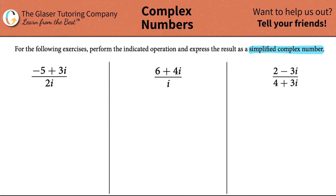I have negative five plus three i, all divided by two i. Remember that i is an imaginary number. The rule of thumb for imaginaries is that we can never have an i value in the denominator — no i value in the denominator.